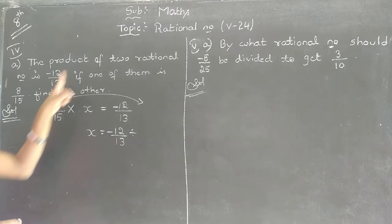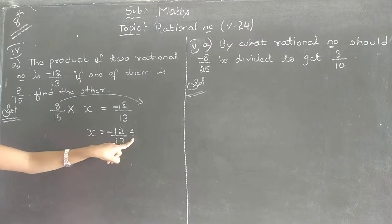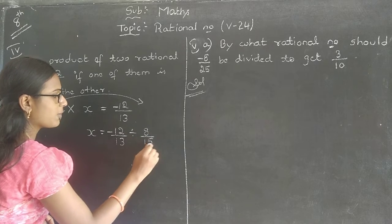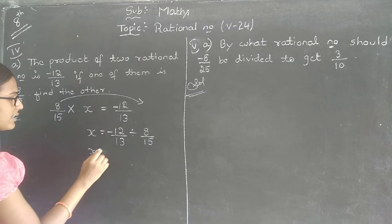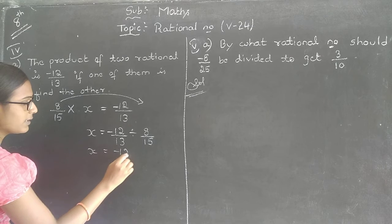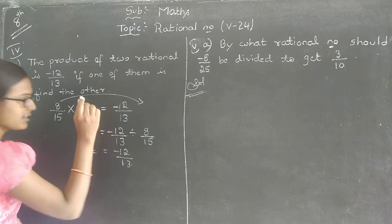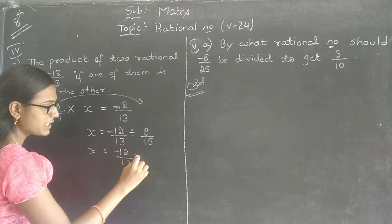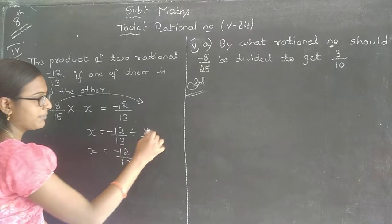Now, since there is into, if I shift it to the RHS part, it will become divided by. What is this number? 8 by 15. Let me copy as it is. x is equal to minus 12 by 13. It will remain as it is. Division of two rational numbers. What is the procedure?